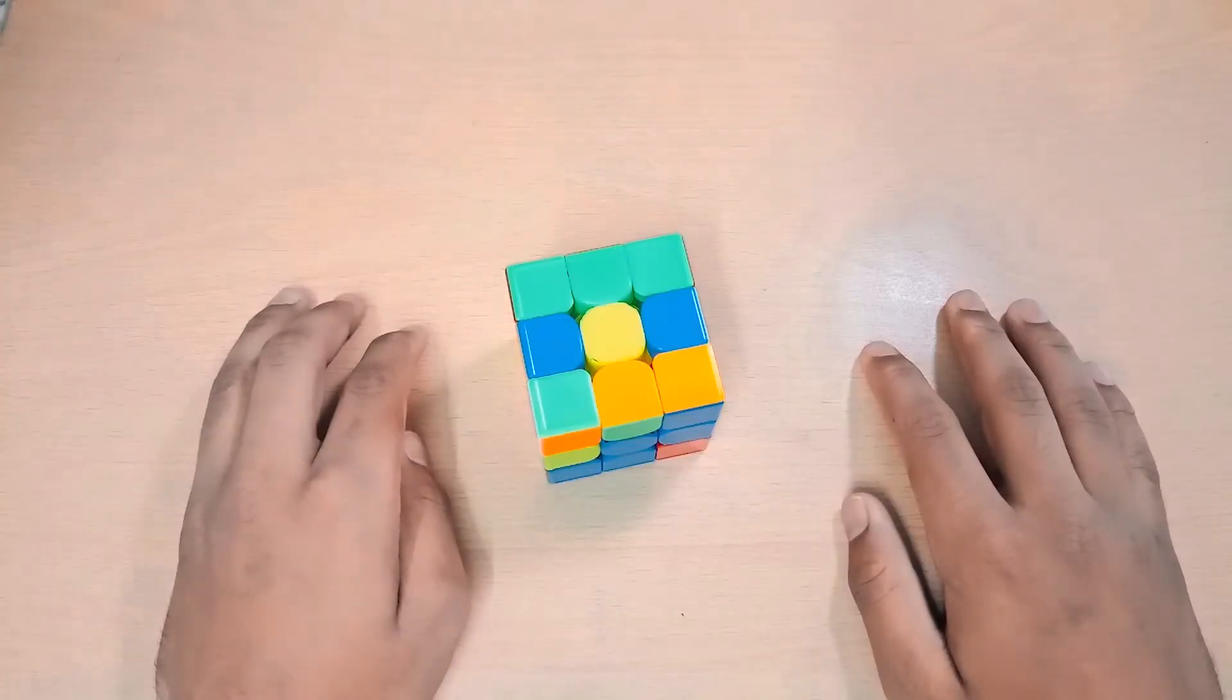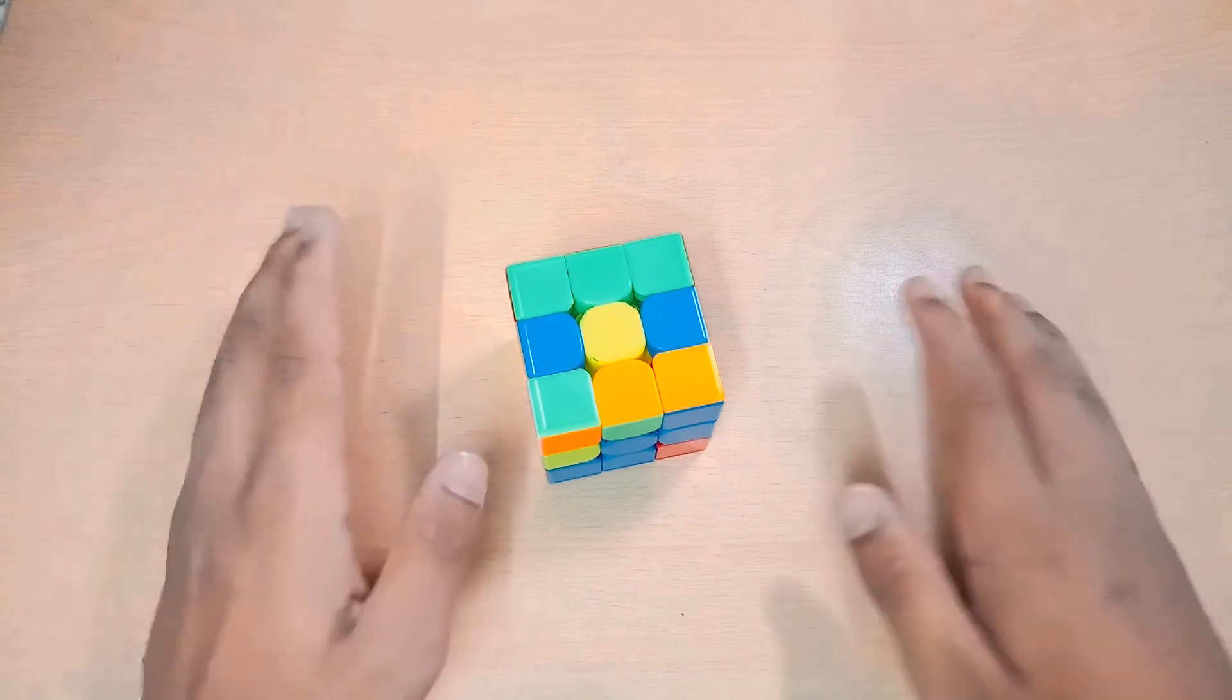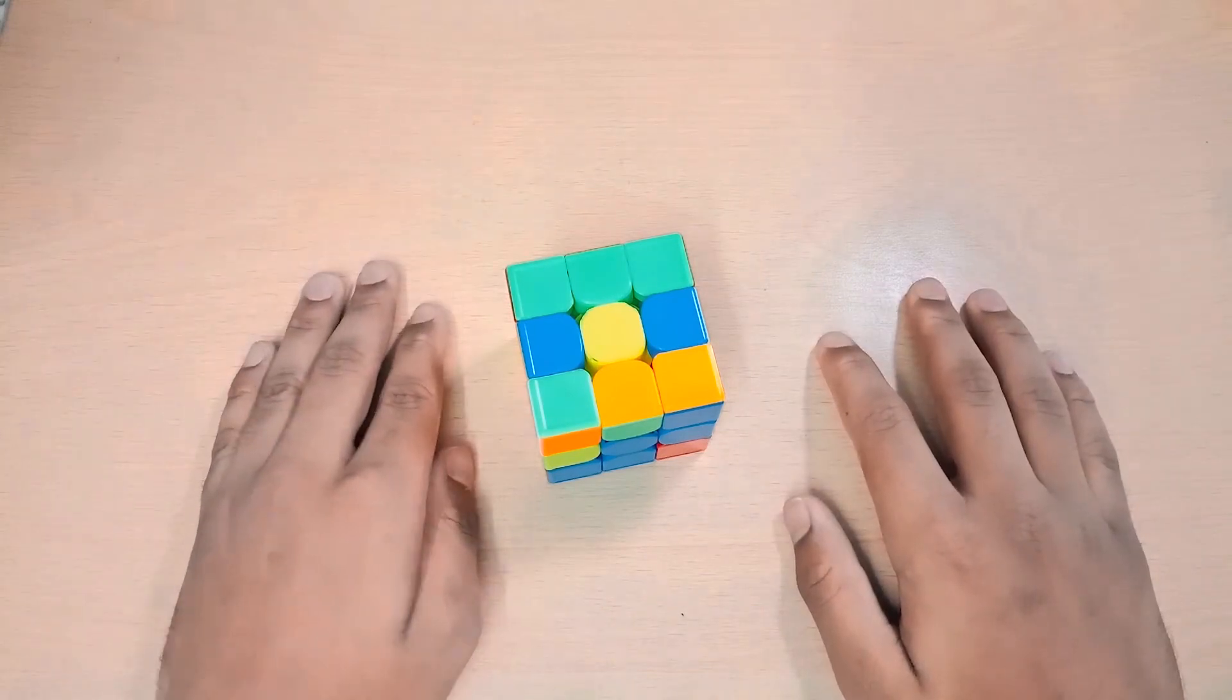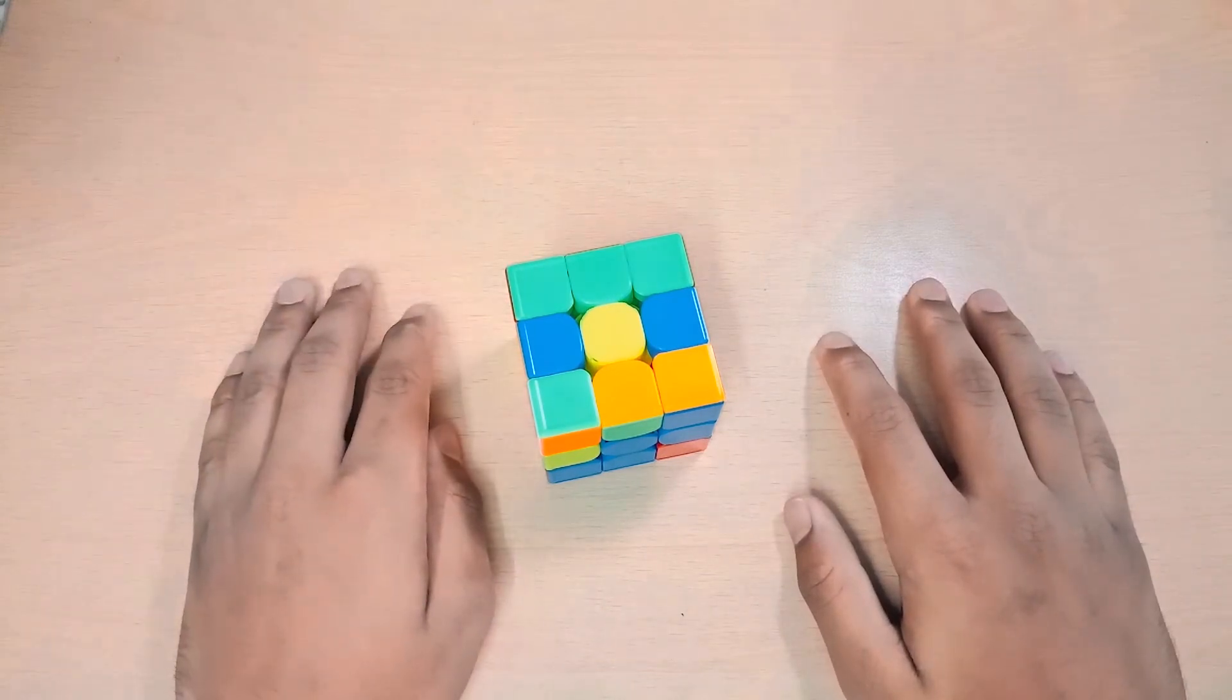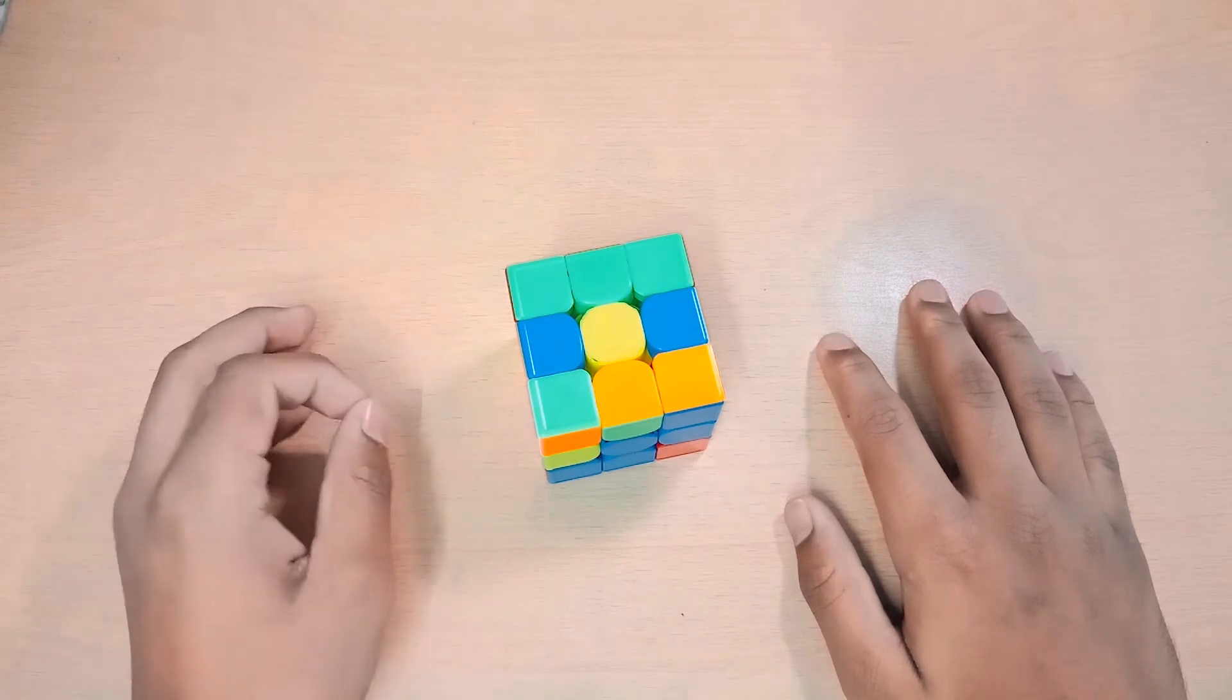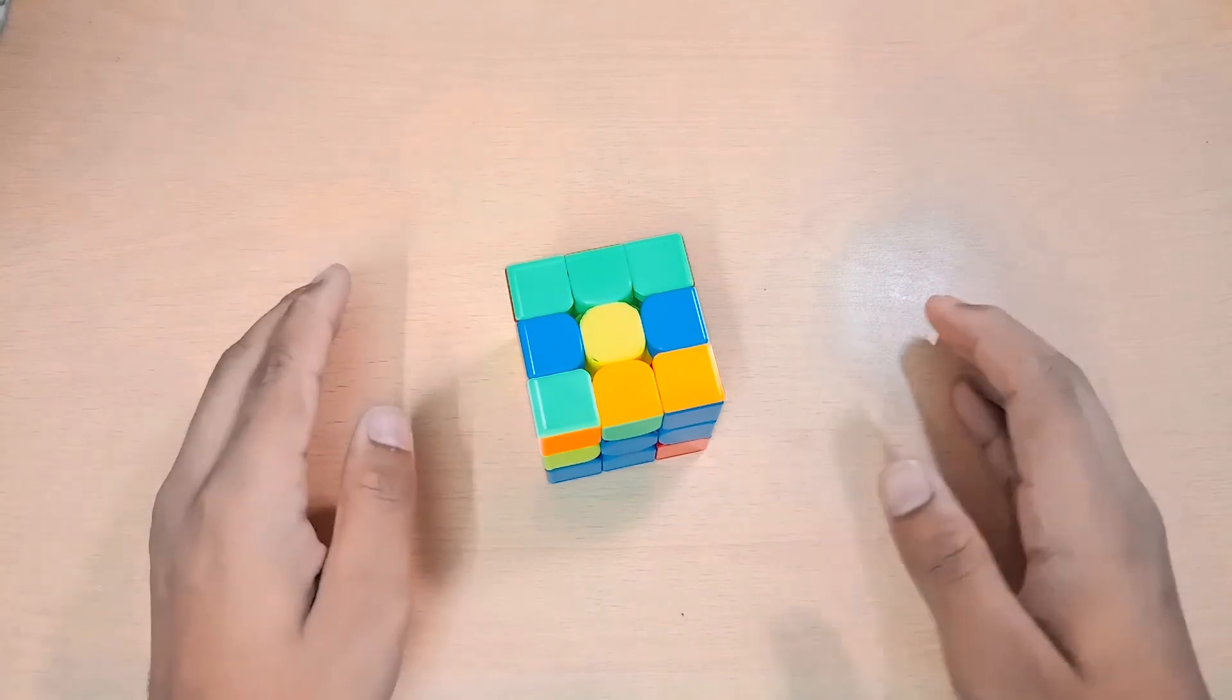Number 1. Don't always plan your first pair in inspection. I know this might not sound obvious for many people, as all of you know that planning first pair is very important, especially if you want to be sub-11, sub-10.